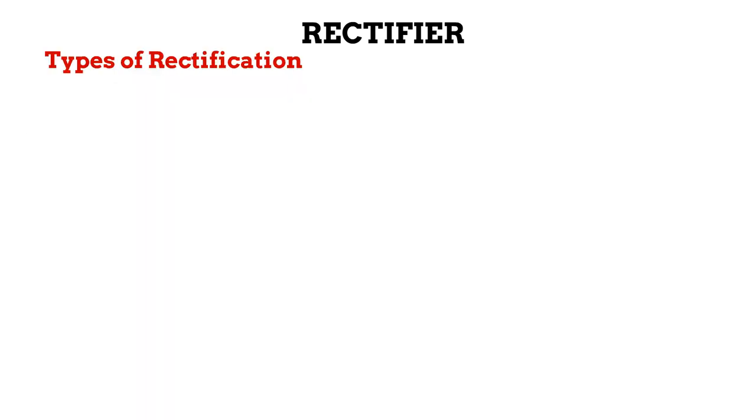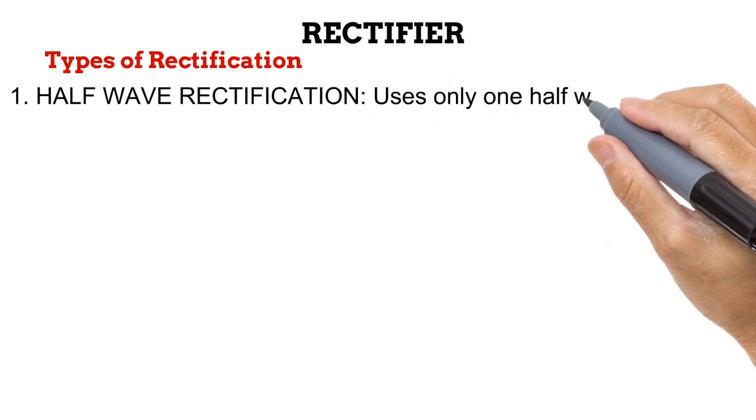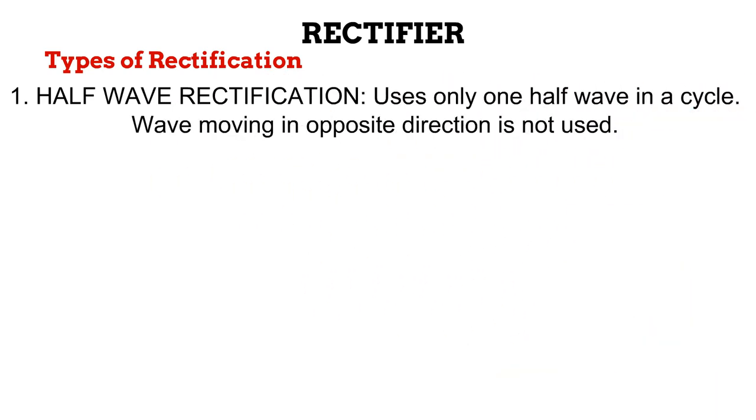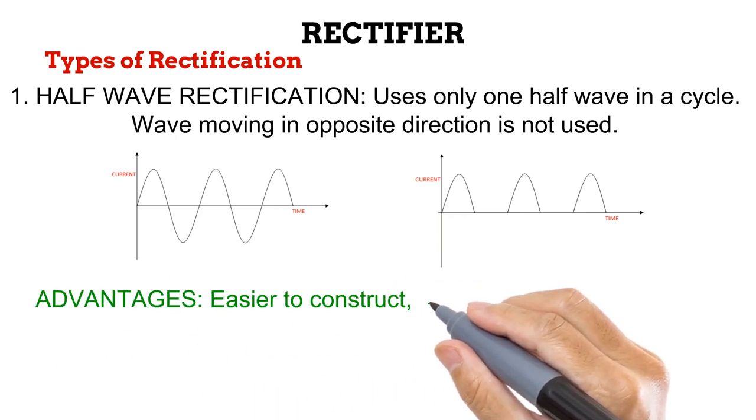There are two types of rectification. First is the half-wave rectification. In this, when converting from alternating to direct current, only one half-wave in each cycle is used. The half-wave in the opposite direction is not used. In the diagram below, you would observe that when the waveform on the left-hand side is rectified by a half-wave rectifier, only the current moving in the positive direction is used. The current moving in the opposite direction, represented by the half-waves below the line, is discarded.